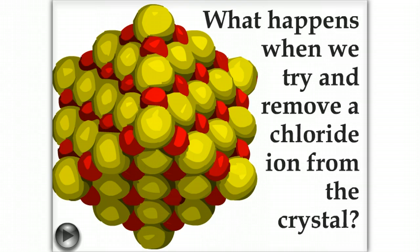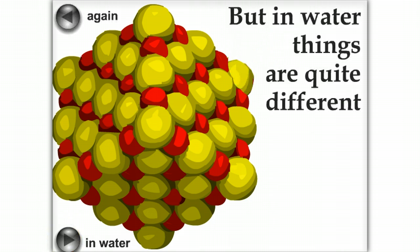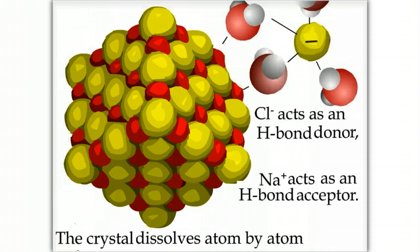If one ion attempts to leave, it's attracted back. But things are different in water. The charge on the leaving ion is dispersed through interactions with polar water molecules.